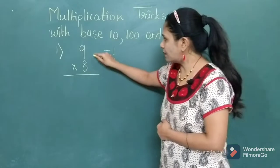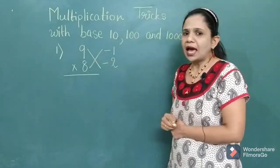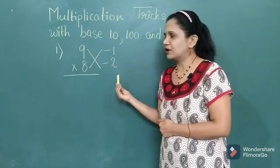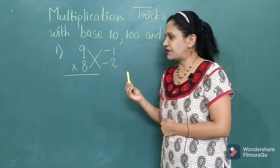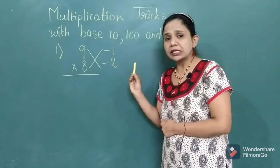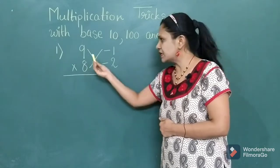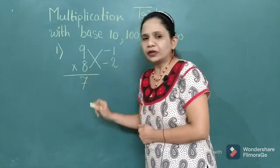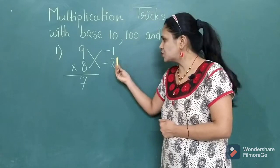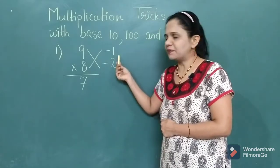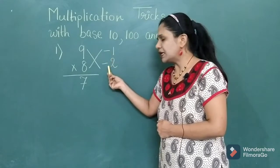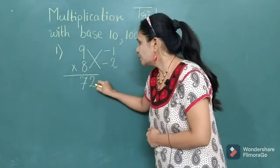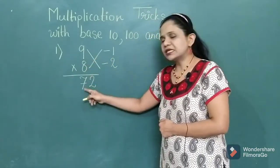In the second step, you have to just draw a cross and then do the subtraction of the numbers in a crisscross manner. So 9 minus 2, you will get 7. 8 minus 1, you will get 7 only. Whenever you do the crisscross subtraction, you will get a common number — write that down first. Then multiply the newly written numbers with each other: minus 1 multiplied by minus 2. Minus times minus gets plus, so 1 times 2 is 2. Your answer: 9 eights are 72.